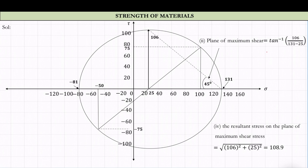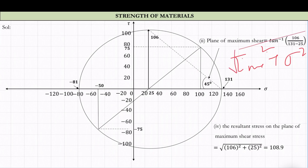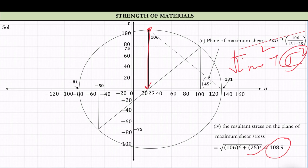Maybe a small point-wise difference exists because we are measuring manually — error will be there since this is the graphical method. The resultant stress on the plane of maximum shear is given by root of (tau_max² + sigma²). The sigma corresponding to maximum shear is 25, so we get root of (25² + 106²) = 108.9 MPa. This completes Mohr's circle. The next topic will be theories of failure. Thank you.